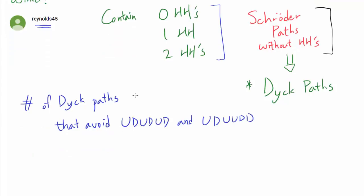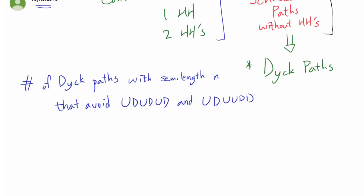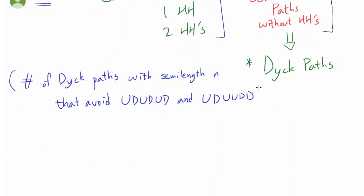So basically, the problem comes down to finding the number of Dyck paths that avoid the two of the patterns that we were given, UDUDUD and UDUUDD. And of course, we want to find a formula for this number based on the semi-length N. We will give this a name, let's call this entire thing D_n.